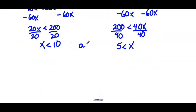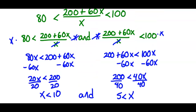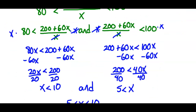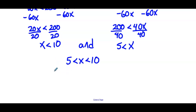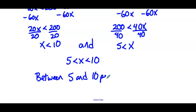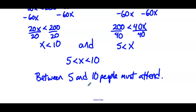So x has to be less than 10, and x has to be greater than 5. Combining them as a single inequality: 5 is less than x, which is less than 10. To answer the question of how many people must attend, between 5 and 10 people must attend her holiday party — meaning 6, 7, 8, or 9 people. The numbers are close enough that listing them out makes sense here.